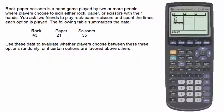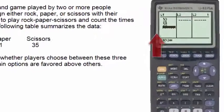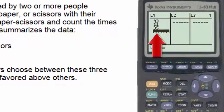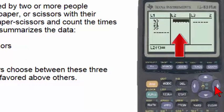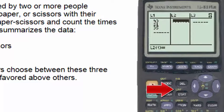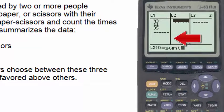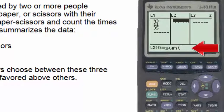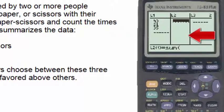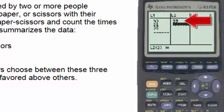The first step will be to put these three numbers into list one. Next we'd like to know the total of these three numbers. We can do that by going to list two and then under the list button select the math menu and then number five for the sum, and we'll ask for the sum of list one. The sum of list one is 99.